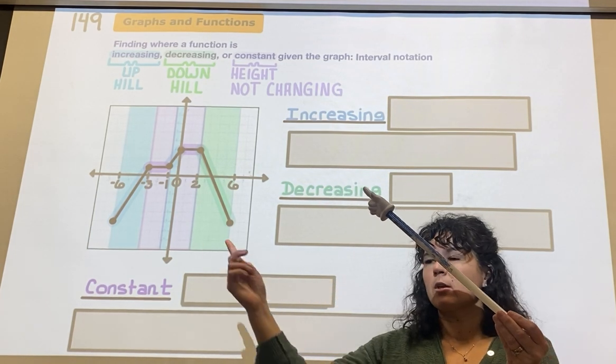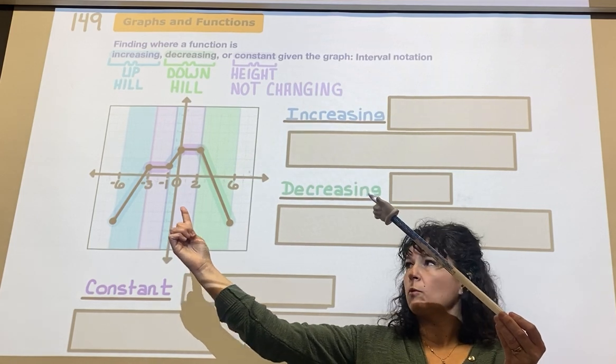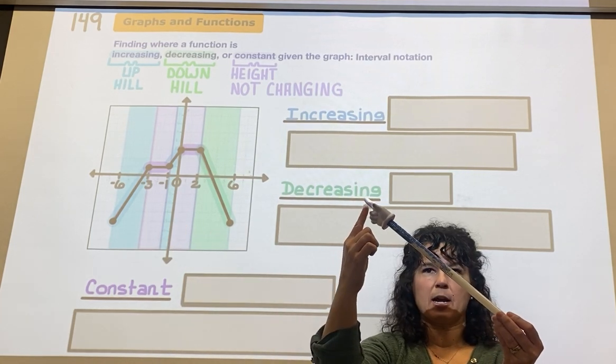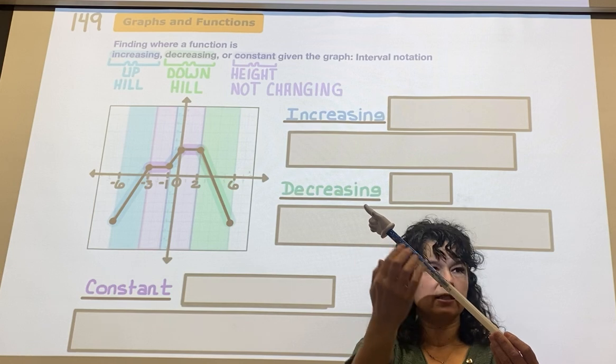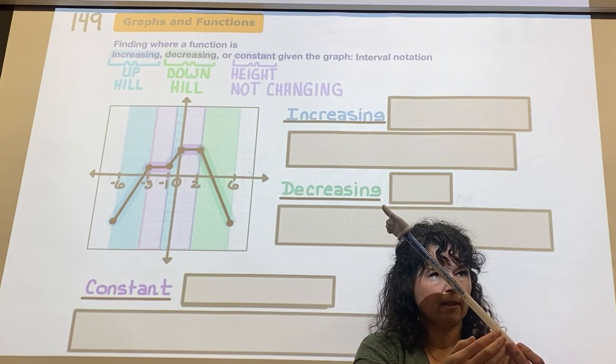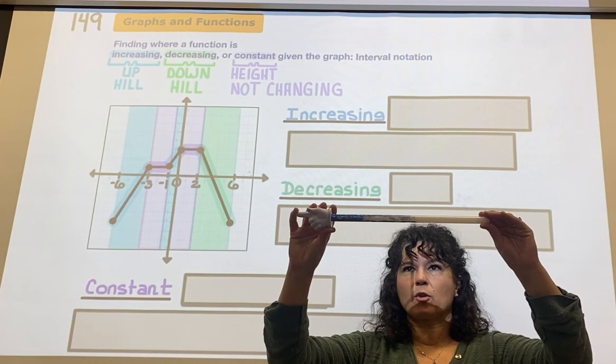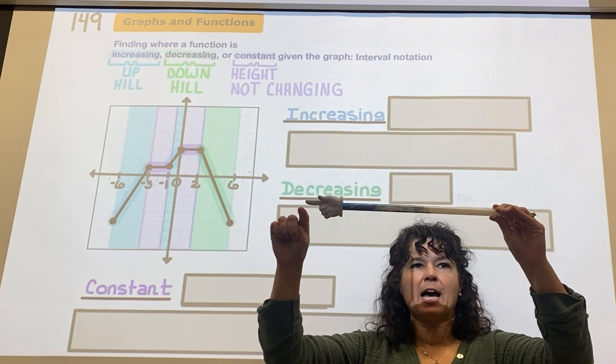If I flip this around, when I read from left to right and my eyes hit this, my eyes start going down, so this is decreasing.